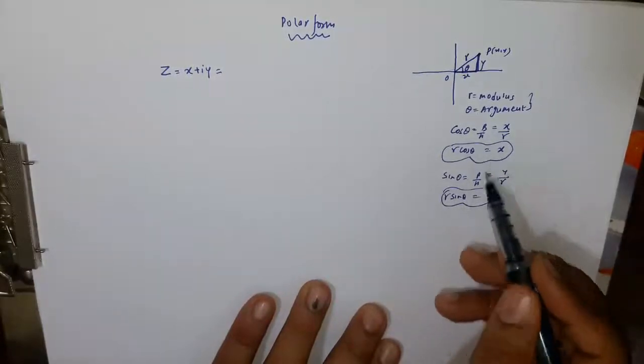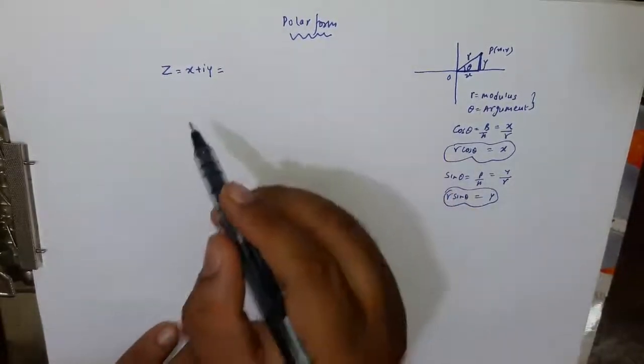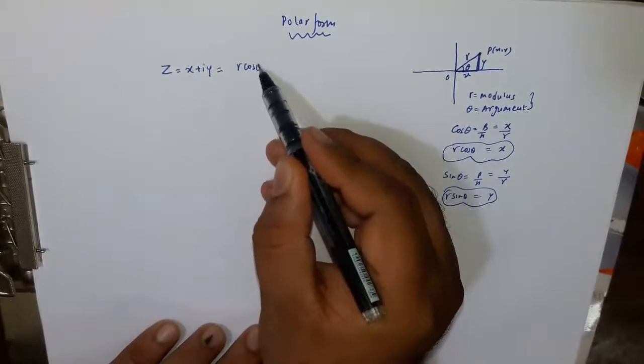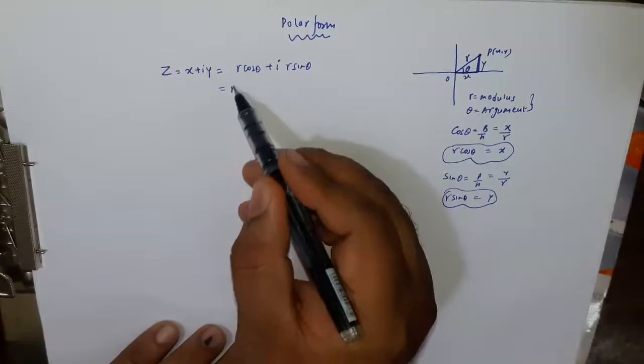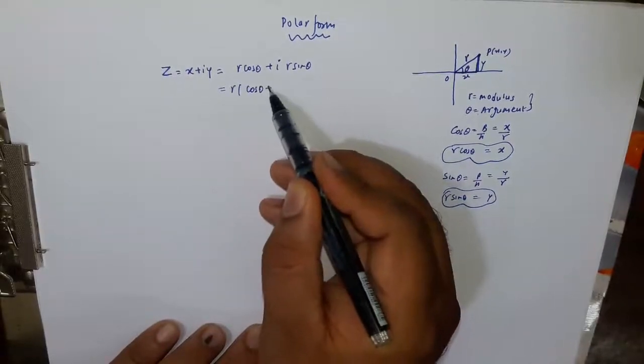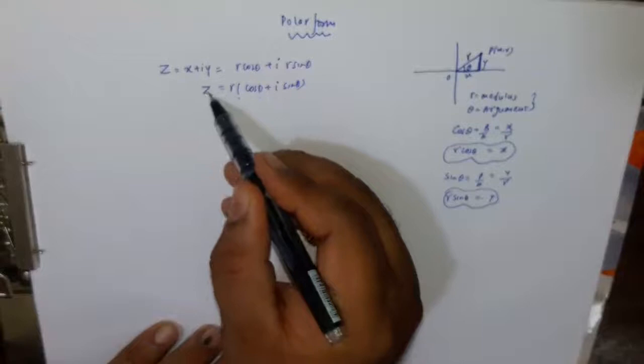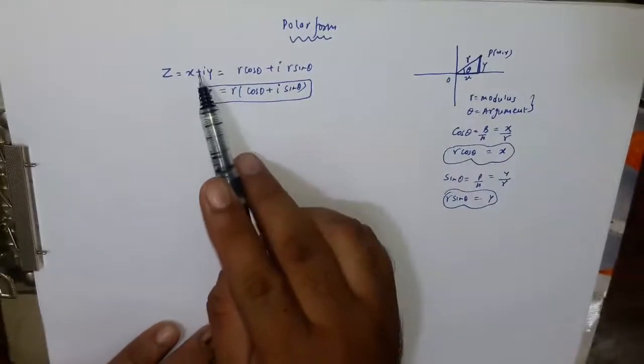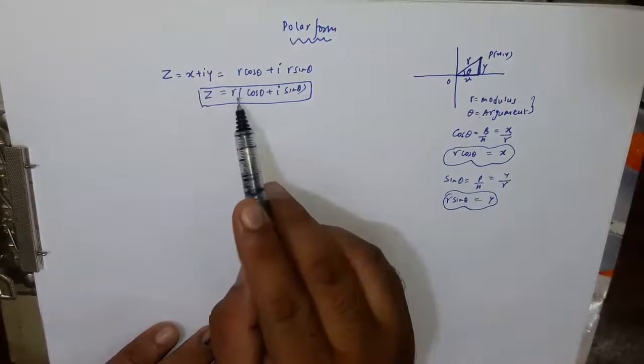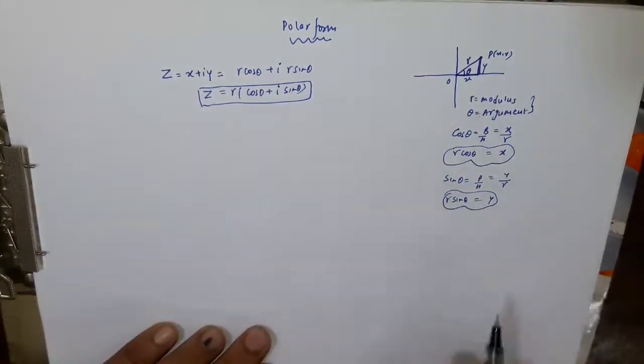Now put this value of x and y here. So x ki jagah put kar denge R cos theta and y ki jagah R sin theta and R common nikalenge. So we have cos theta plus iota sin theta. So this form is called polar form. Basically, har ek complex number ki is form ko polar form kehte hai, jisme R ki value find out karna hai which is called modulus and theta is called argument.